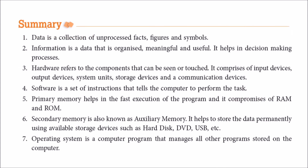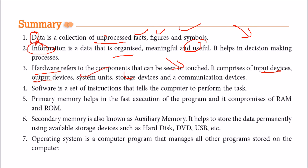Let us summarize what we have learned. Data is a collection of unprocessed facts, figures, and symbols. Information is data that has been organized into a meaningful and useful form for decision-making purposes. Hardware refers to components that can be seen or touched — they are tangible — and consists of input devices, output devices, system units, storage devices, and communication devices. Software is a set of instructions that tells the computer to perform certain tasks. Primary memory enables fast program execution and comprises RAM or ROM.